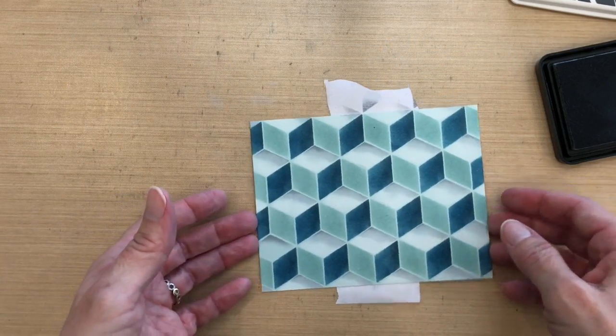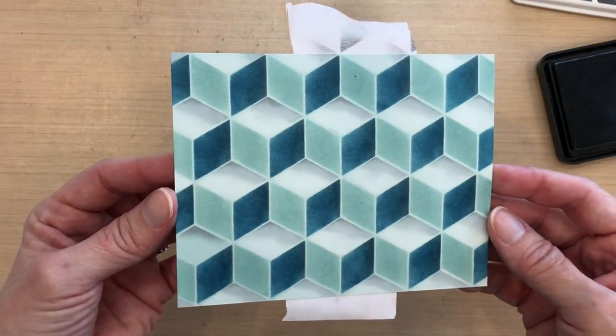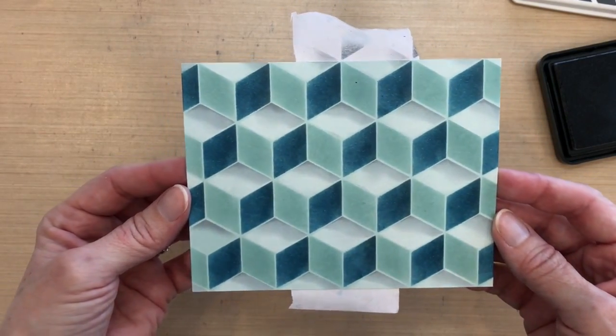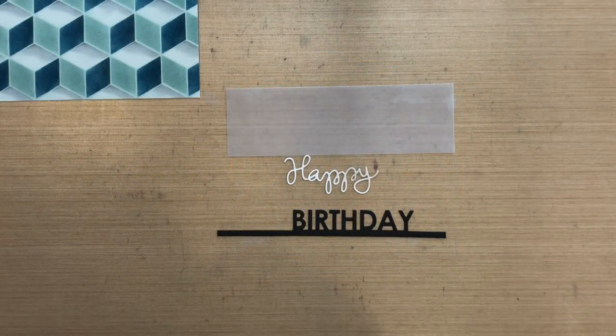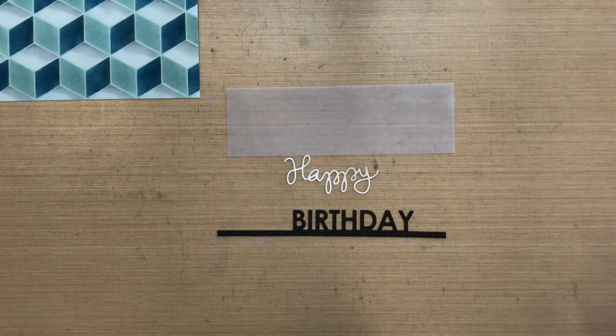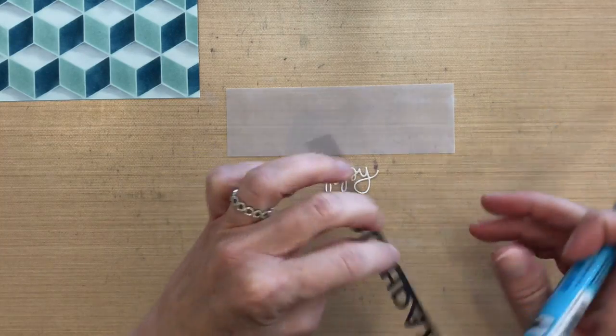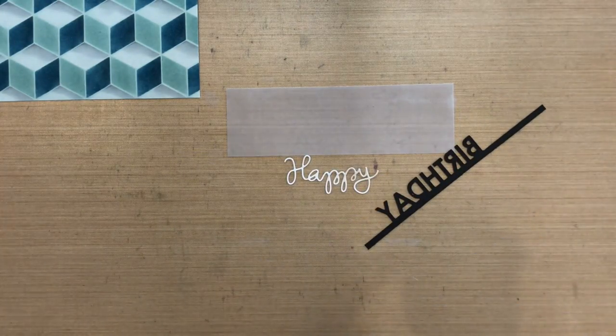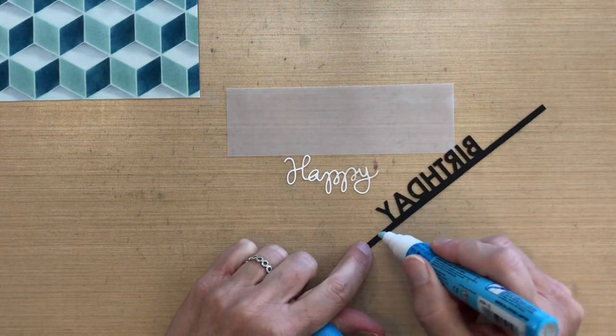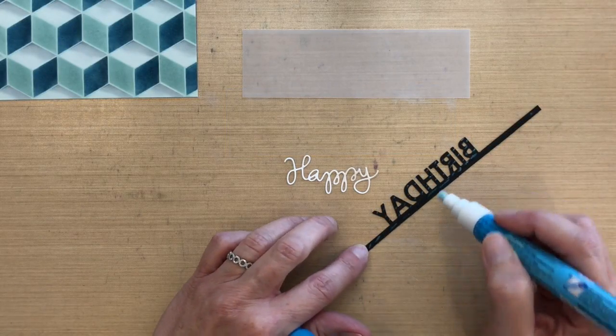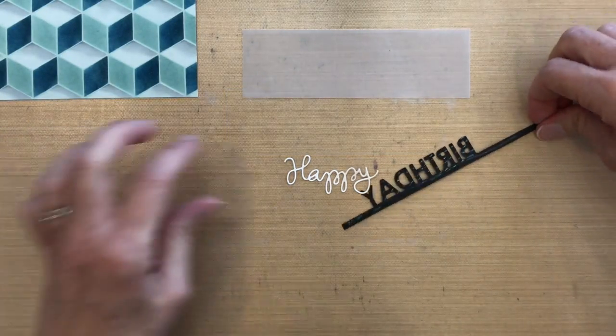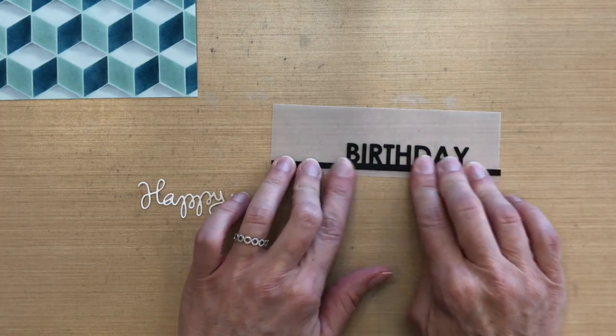Now I'm going to work on the rest of the card. I've cut the happy out of white and the birthday out of black, and with this particular die it cuts the birthday and it's connected to the paper below it, so I just cut a thin strip under that. So I'm going to add some two-way glue to the bottom and I'm adhering it to a piece of vellum just at the bottom.